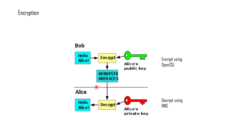Once Bob has encrypted the message, Alice can decipher it because she has the private key. Alice uses her private key to decrypt the message. Because only Alice has access to the private key, only she can decrypt that message. The message encrypted by Bob using the public key can only be deciphered by someone with the private key, and since only Alice has it, only she can read it.